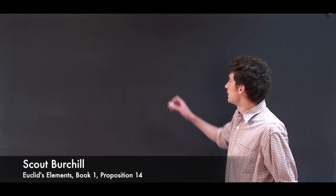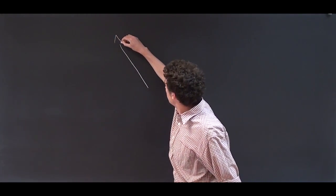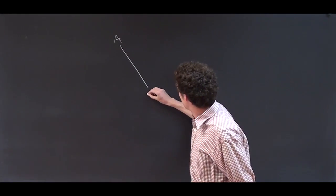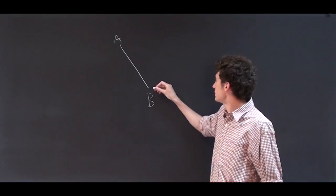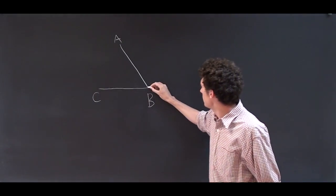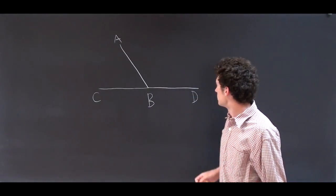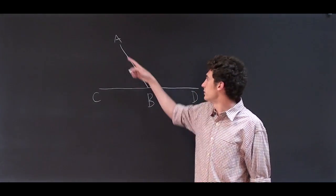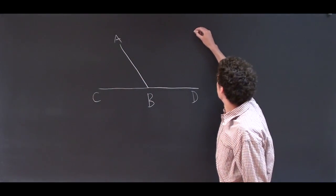So what we're given for this proof is line AB, and from the point B on it, two lines produce BC and BD such that they produce adjacent angles ABC and ABD equal to two right angles.